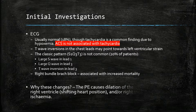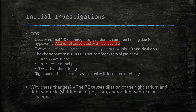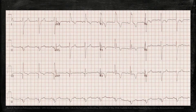Why do these ECG changes occur in a pulmonary embolism in terms of mechanism? The pulmonary embolism causes dilation of the right atrium and right ventricle, and this may also lead to right ventricular ischaemia, causing the manifestations of the ECG abnormalities. Here we have an ECG of a patient with tachycardia and right bundle branch block. This is another ECG showing the classic S1Q3T3 pattern.